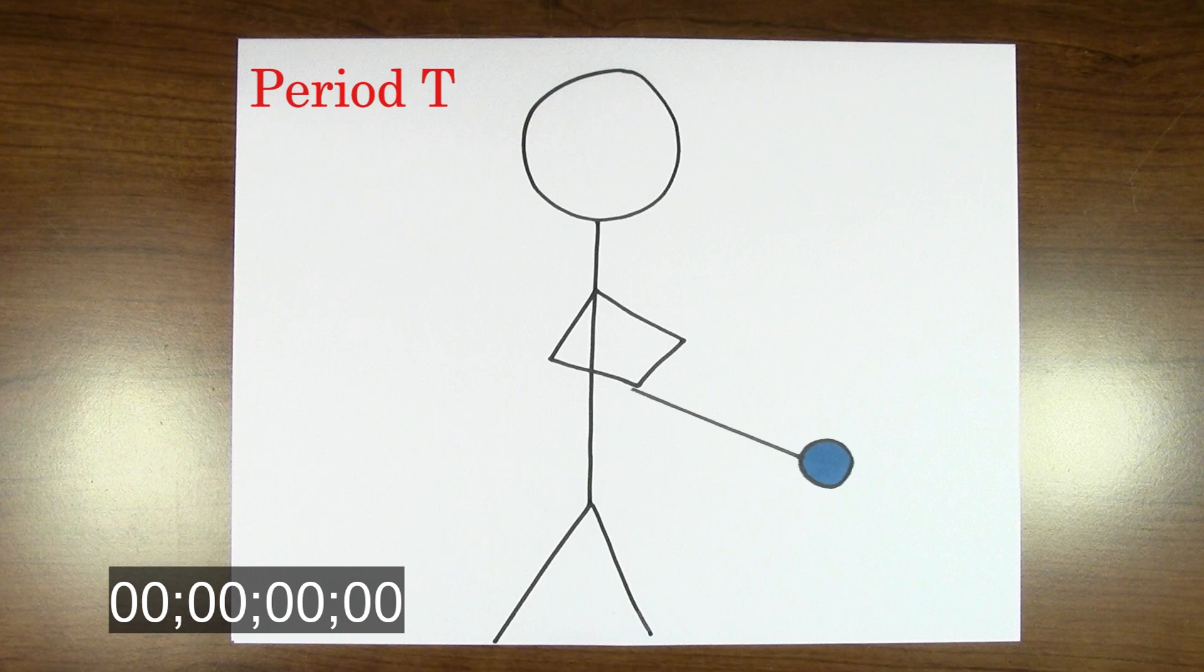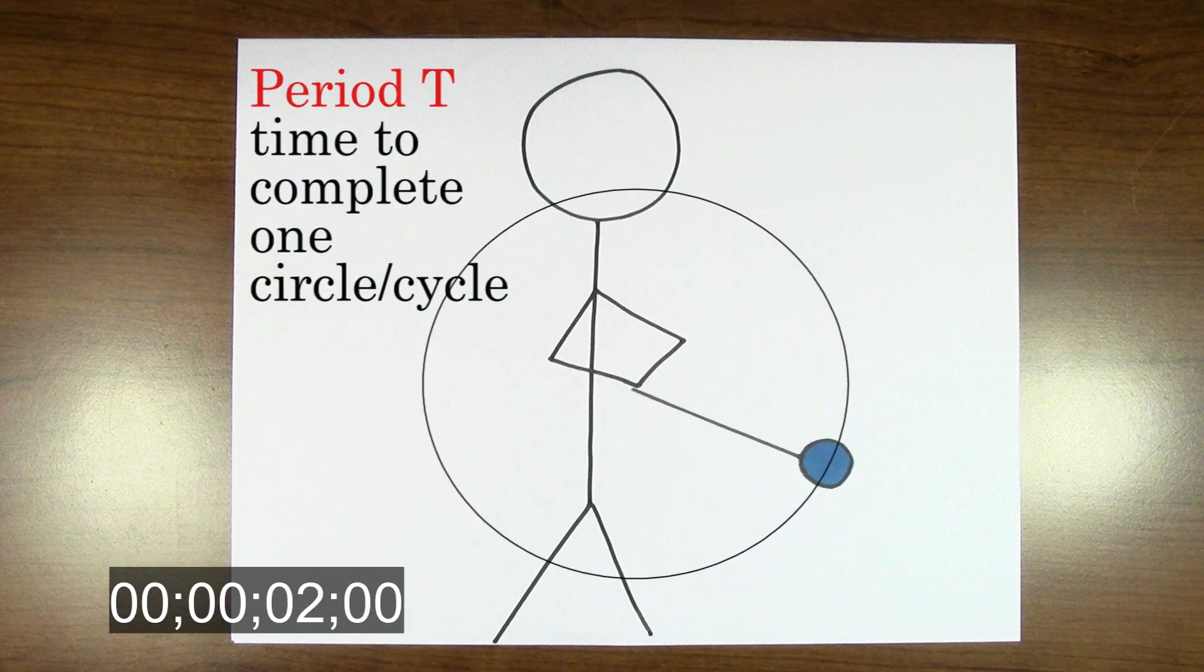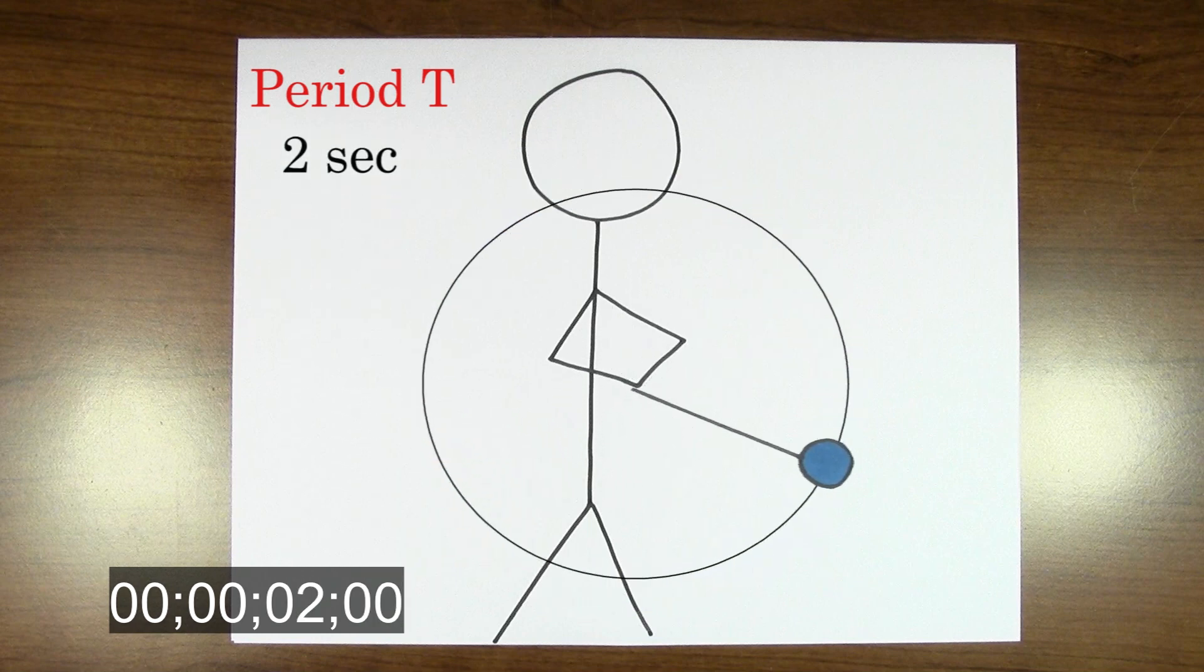The first idea is called the period. The period is the time it takes to complete one revolution or one entire cycle of a process. So for this yo-yo, the period is two seconds.